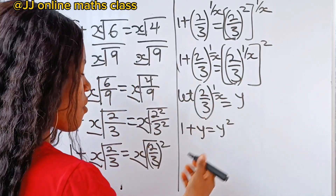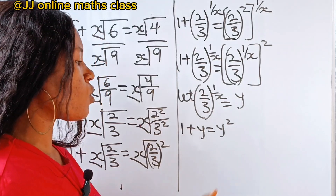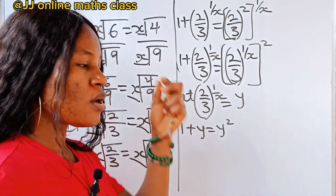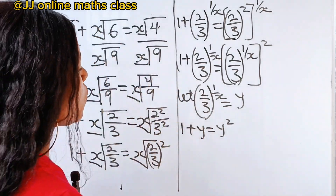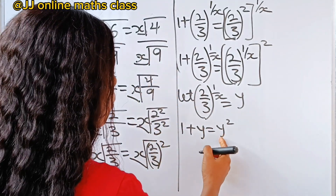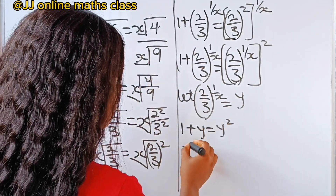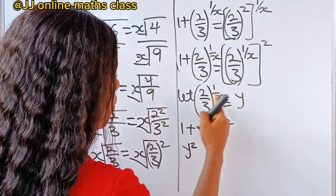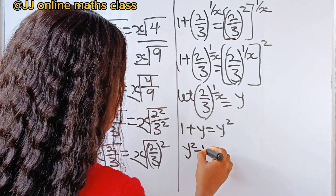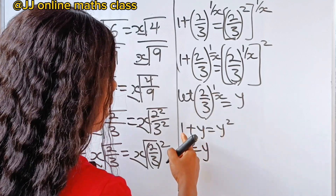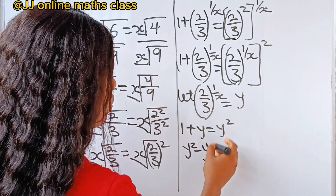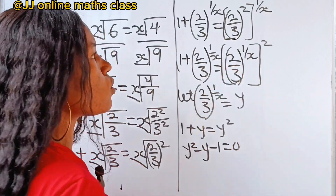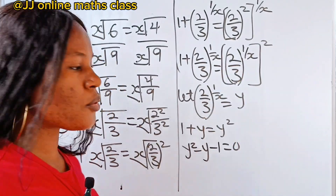Now let's arrange this quadratic equation properly. If we do that, we have y squared, then minus y, and minus 1, is equal to 0.